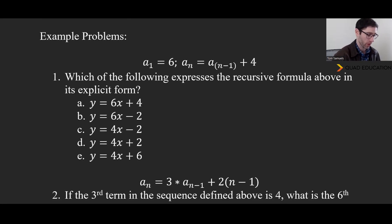Okay, we've got two here. We're just going to go through one at a time. So this is the first one. Take a look and see what you can do. Okay, let's take a look. It asks which of the following expresses the recursive formula above in explicit form. So we are told that we start at the value of 6 and that every term after that we are going up by 4.